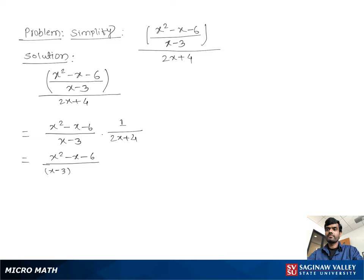Now we take the factors of x² - x - 6, which is (x + 2)(x - 3), over (x - 3). Then we take the factor 2 from the denominator, giving us 2 times (x + 2).